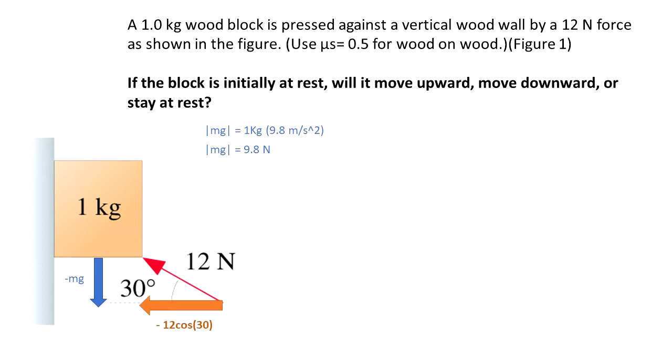We are going to break the 12 N force into components. The x component is negative 12 cosine of 30 because it's going to the left and positive 12 sine of 30 that's going up. We see that we broke the 12 N into components.